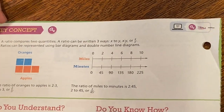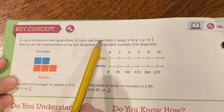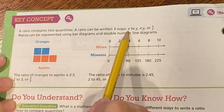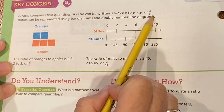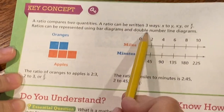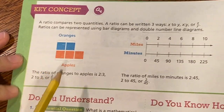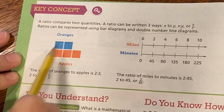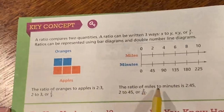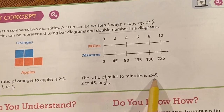Let's look at the next page. Key concept: a ratio compares two quantities and can be written three ways — x to y, x semicolon y, or x over y. Ratios can be represented using bar diagrams and double number line diagrams. For example, apples to oranges is two to three, and the ratio of miles to minutes is two miles in 45 minutes.